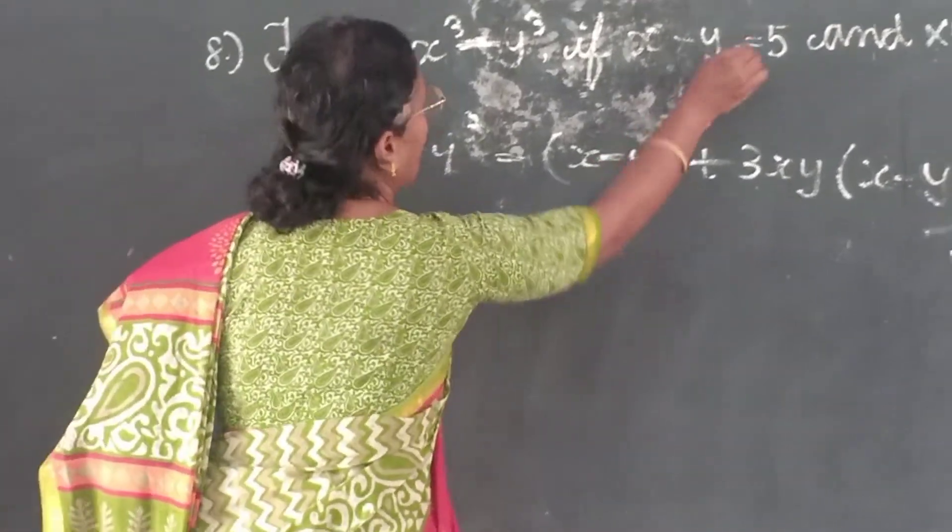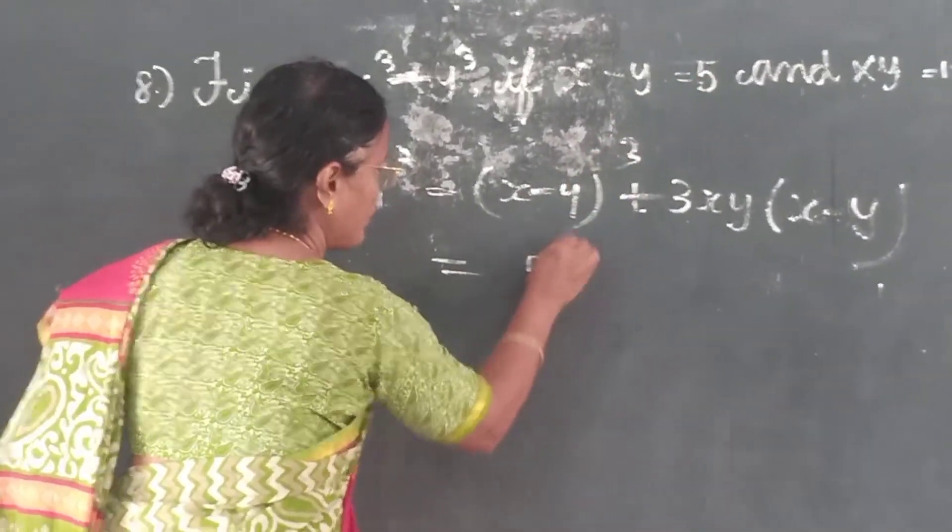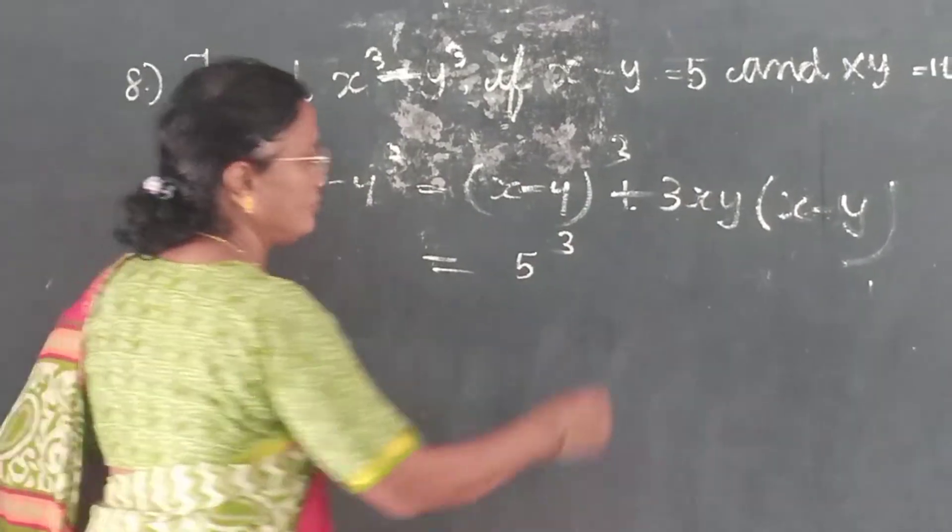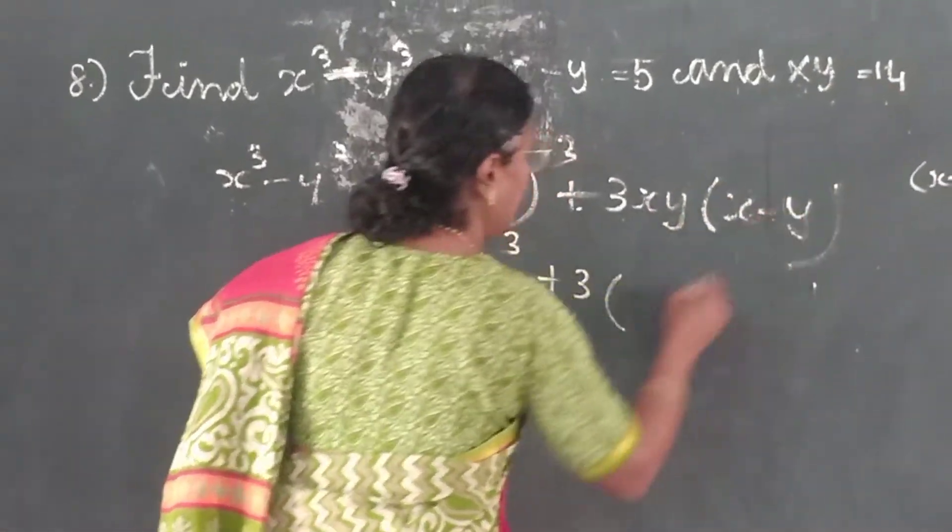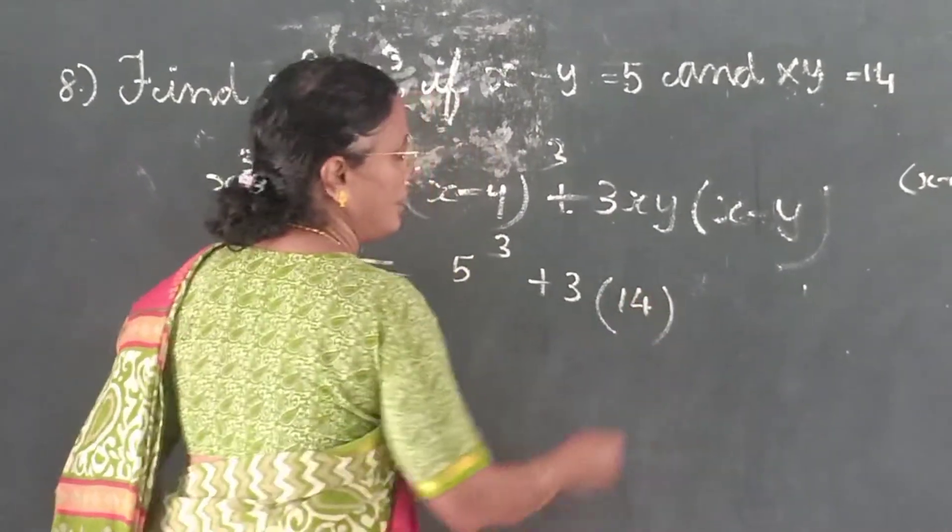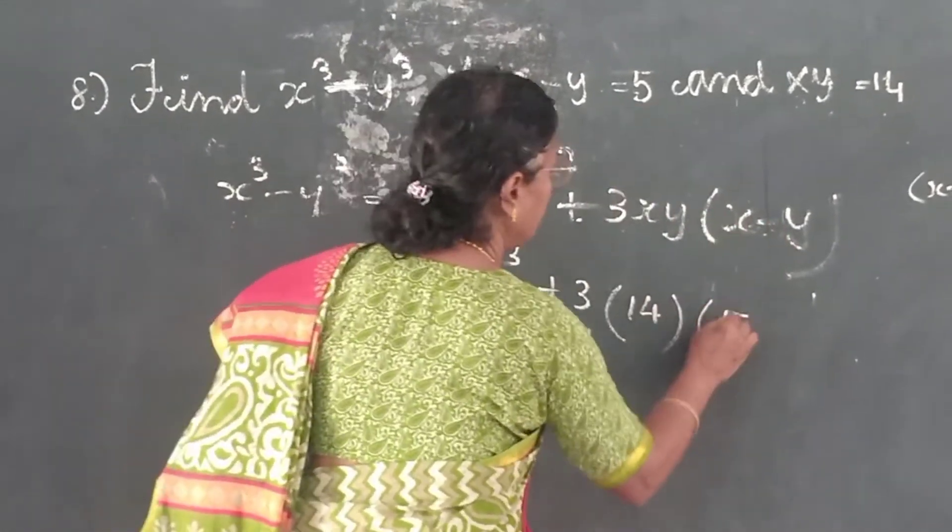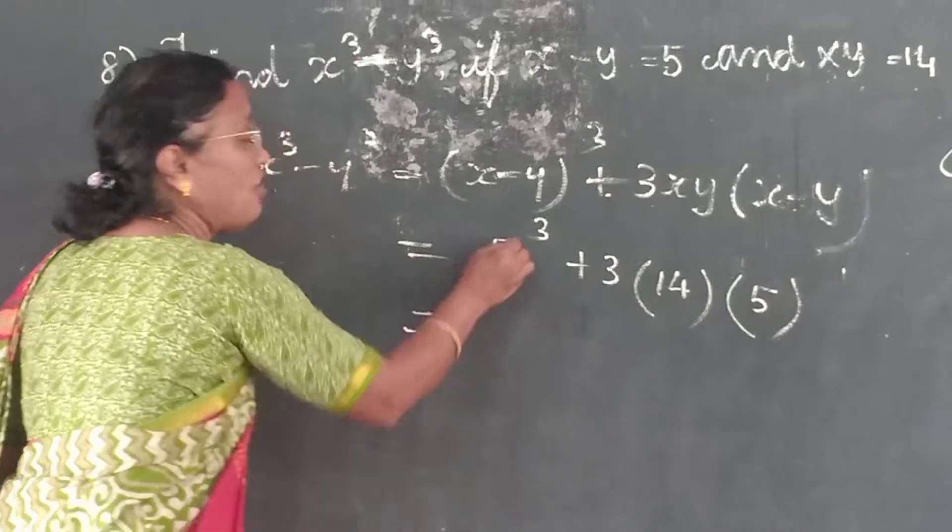So here what is x minus y? 5. So 5³ plus 3 into xy is what? 14. x minus y is what? 5.